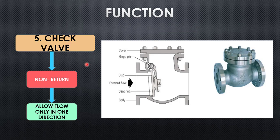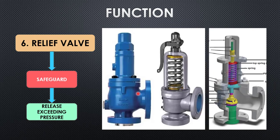The fifth valve is the check valve, also known as a non-return valve, which means it allows flow in one direction only. Looking at its cross-section, the valve has an internal disc that permits flow in one direction, but if flow comes from the opposite direction, the disc closes and arrests it. Check valves are placed wherever only one direction of flow must be permitted.